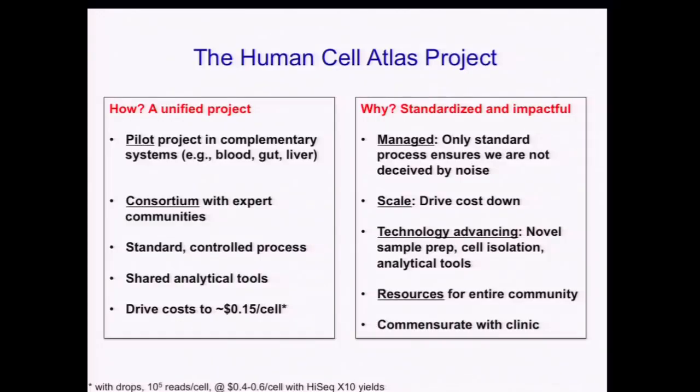Let me say a few words about how. It's a unified project, and because it is so large, I suggest we should first engage in a pilot project in a few complementary systems — maybe the blood, which is easily accessible but heterogeneous; maybe the gut, which has many different types of cells — immune, epithelial, neural, and others — all embedded in three-dimensional tissue; maybe the liver. Obviously, we need to do it in partnership with expert communities and the relevant institutes.